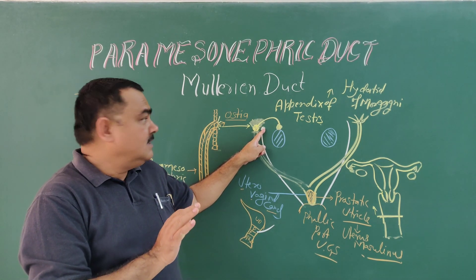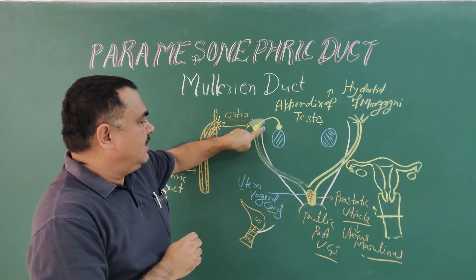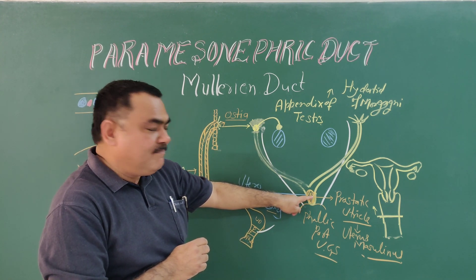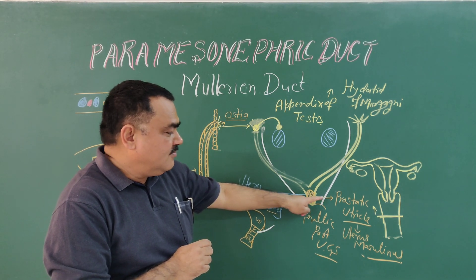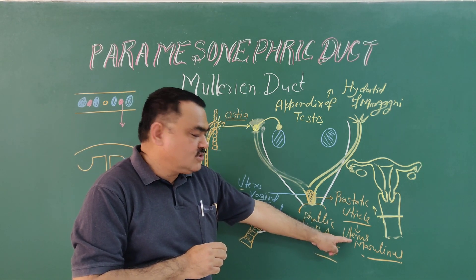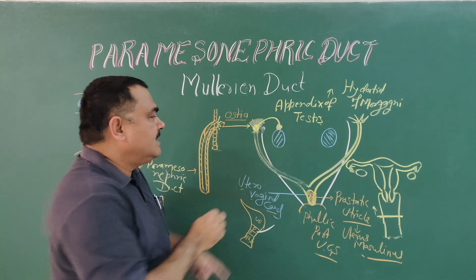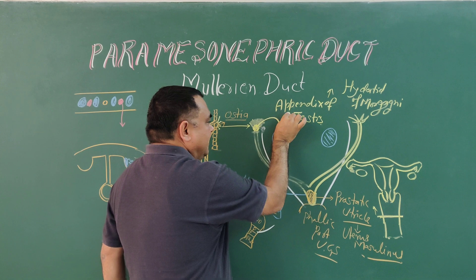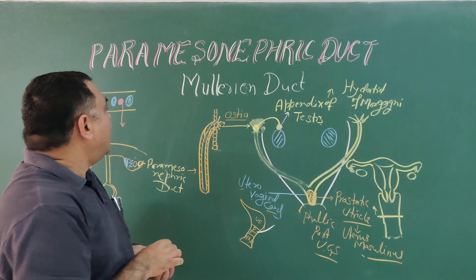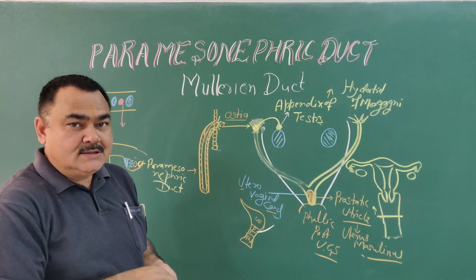So the mesonephric duct has already been discussed. To summarize: in male, the paramesonephric duct forms the prostatic utricle or uterus masculinus, and the appendix of testis — these two structures are formed. So this is all about the paramesonephric duct, also called the Müllerian duct. Thank you.